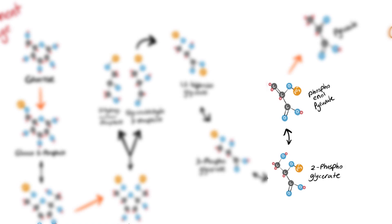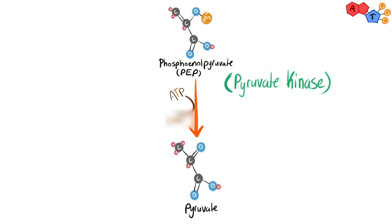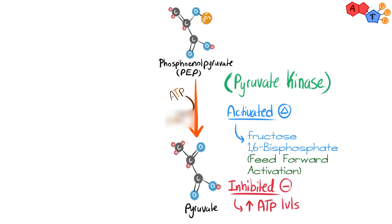Next, we make phosphoenolpyruvate, an energy-rich molecule, by removal of a water molecule. Finally, phosphoenolpyruvate will undergo dephosphorylation, donating its phosphate group to a molecule of ADP, producing a molecule of ATP. After the removal of the phosphate group, phosphoenolpyruvate will be converted into pyruvate. This reaction is catalyzed by the enzyme pyruvate kinase. This is the third regulated step of glycolysis. It is activated by fructose 1,6-bisphosphate, a mechanism called feed-forward activation, and inhibited by increased levels of ATP.